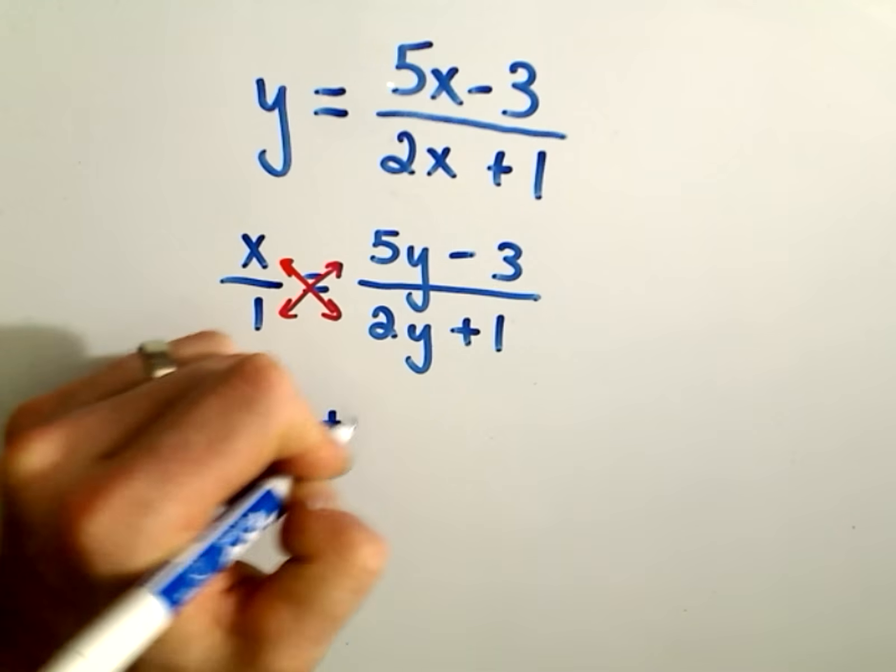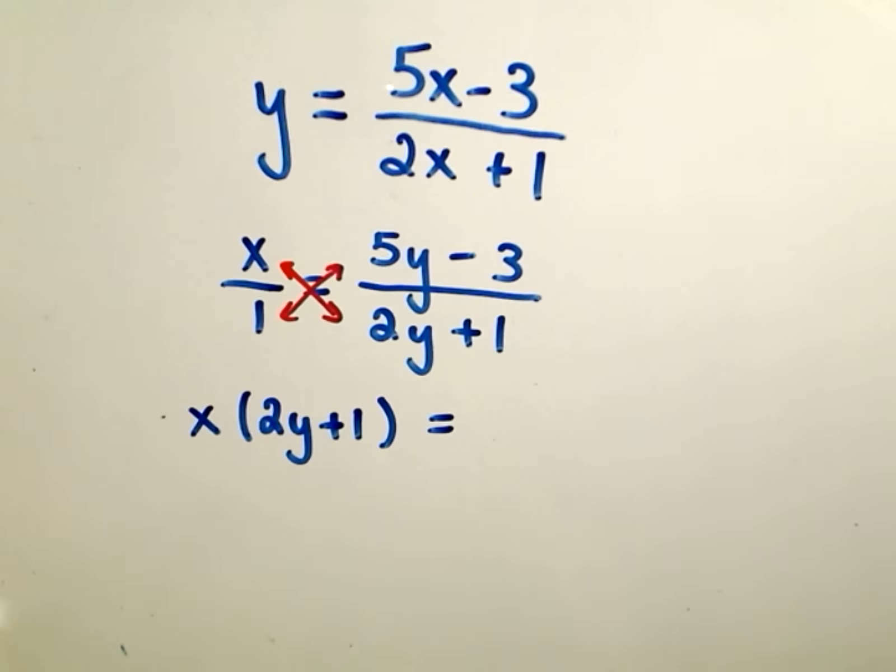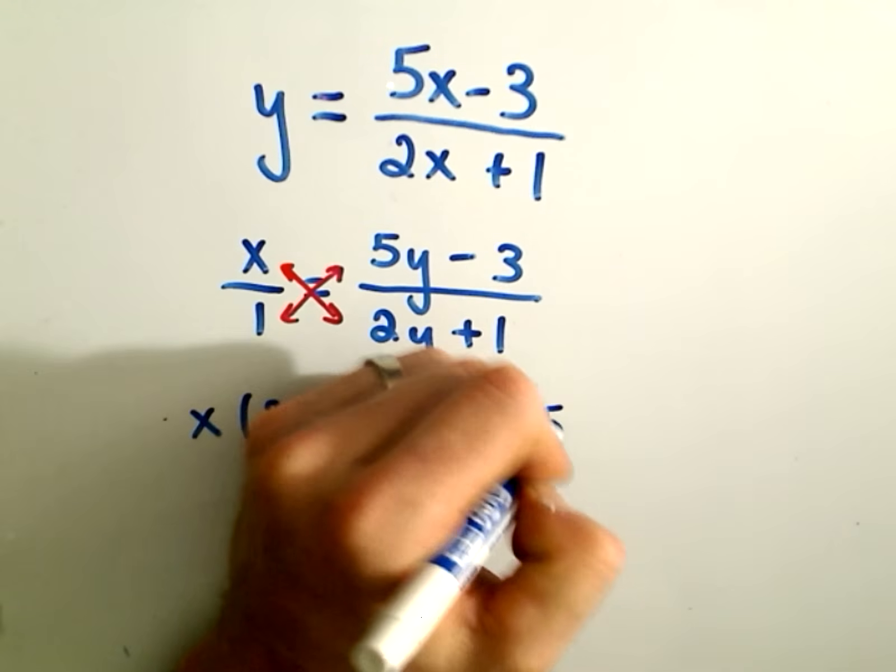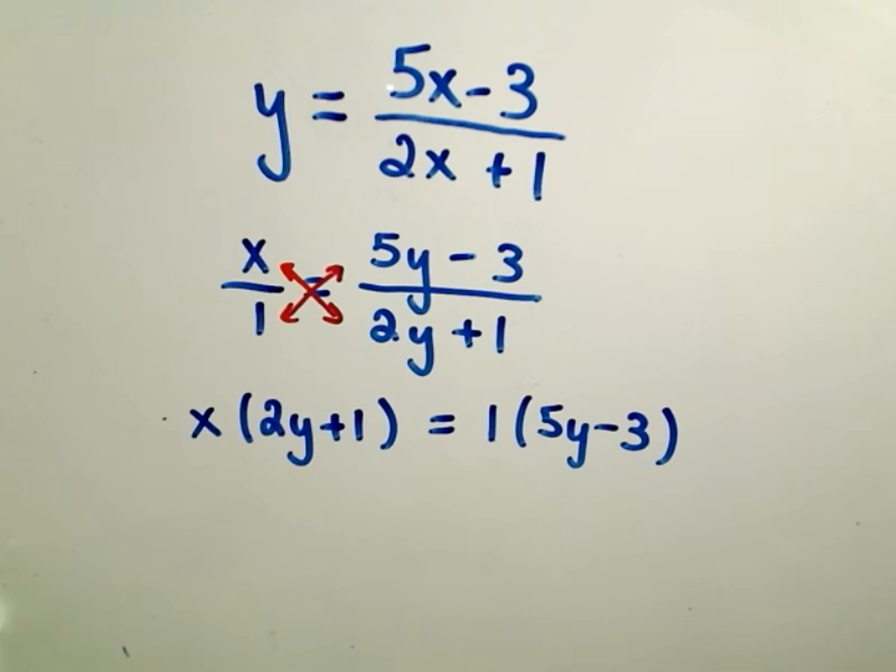So on one side of the equation, we'll get x times all of the denominator, so make sure you put it in parentheses. And then on the right side, we'll just get 1 times this stuff, which, well, I guess let's write it. We'll just be that stuff. At this point, again, I'm trying to solve for y.